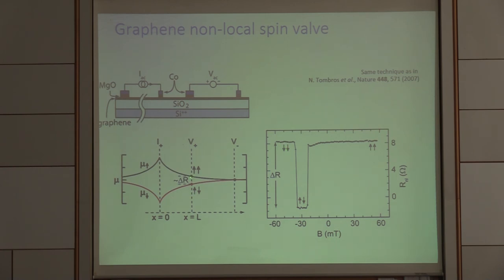So this distance here, this delta R is directly proportional to the difference in the electrochemical potentials of spin up and spin down underneath this electrode. Now we can also now sweep back. And you see this hysteresis effect, which simply comes from the switching behavior of the contacts.